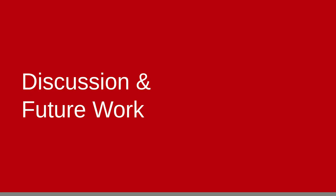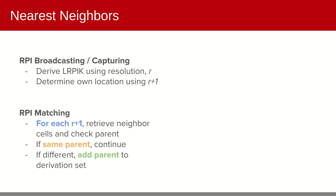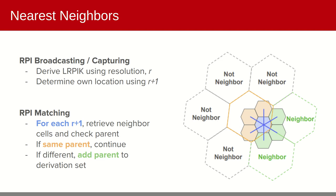We utilize the hierarchical characteristic of H3 to handle the case where two individuals are near each other across cell boundaries and for any fuzziness in coarse location. We use a resolution R to provide location context for the L RPIK, but resolution R+1 to store location for later RPI matching. When matching RPIs, for each R+1 location in blue, we retrieve neighboring cells and check the parent. If it's the same parent, continue; if it's different, add the parent to the set of additional location cells for RPI derivation. This reduces the total number of neighboring cells from 6 down to 2 or 0 if located in the center of a cell.